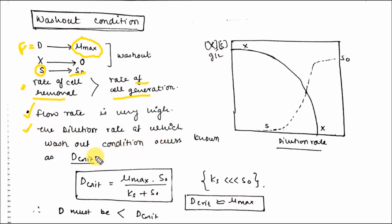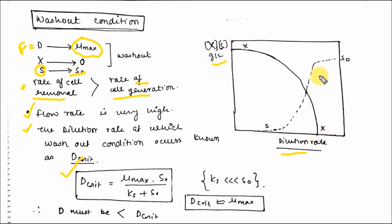The critical dilution rate D_critical is the dilution rate at which washout occurs. Its formula is: D_critical equals μ_max times S_naught divided by (K_S plus S_naught). On a graph of X versus D and S versus D, X tends to zero and S tends to maximum at D_critical.